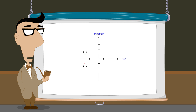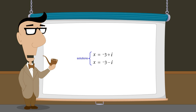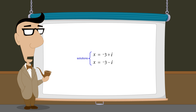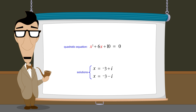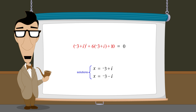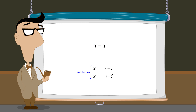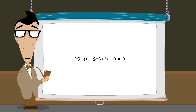So we have seen that complex solutions to quadratic equations are represented graphically as points on the complex plane. But how can we make sure that these solutions are correct? We should be able to check these solutions by substituting these values of x back into the original equation x-squared plus 6x plus 10 equals zero, to see if they produce a true statement. For instance, if we replace x with the value negative 3 plus i and perform the arithmetic, we should get the true statement zero equals zero. But before we can do that, we have to know how to perform operations like addition and multiplication on complex numbers. In the next lecture, we will see how this is done.